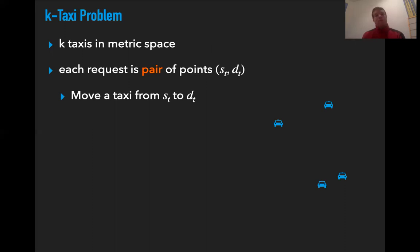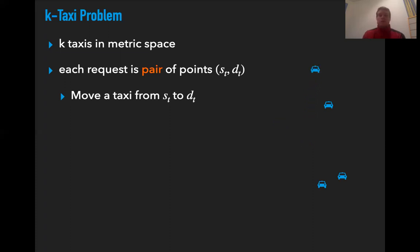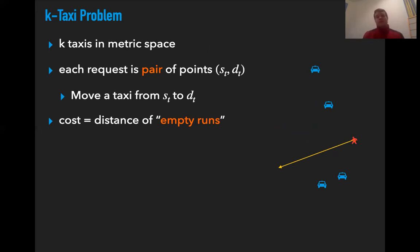In the k-taxi problem, which is very similar to the k-server problem, we have k servers in a metric space. Each request is a pair of points (s_t, d_t) corresponding to a passenger requesting a taxi. To service such a request, we select one of the taxis that moves first to s_t and then to d_t. What's important is that the cost is defined not as the total distance traveled by the taxis, but just the overhead distance traveled while not carrying a passenger. The distance traveled with a passenger is the same for any algorithm, so it makes sense to exclude it.